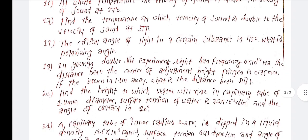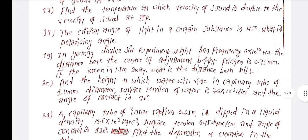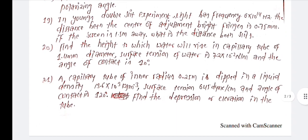Find the height to which water will rise in a capillary tube of 1.4 mm diameter. The surface tension of water is 7.2 into 10 to the minus 2 Newton per meter and the angle of contact is 10 degrees.